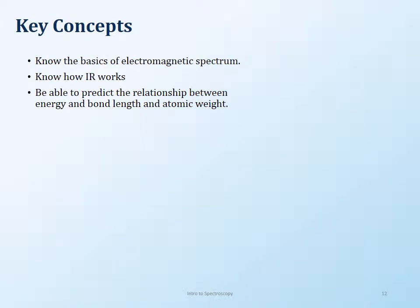The key concepts to know from this presentation: the basics of the electromagnetic spectrum — energy, frequency, and which regions have higher energy; how IR works in terms of vibrations; and how to predict the relationship between bond energy, bond length, and where absorptions will appear in the IR spectrum. For functional group identification in detail, that will be covered in the next presentation.